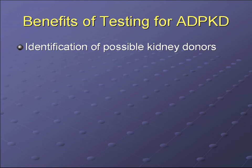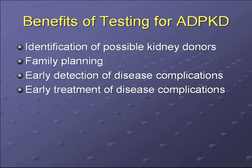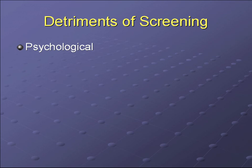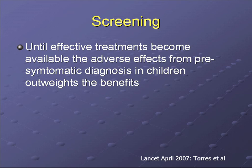The potential benefits of screening include identification of possible kidney donors, which is probably where genetic testing has its greatest utility, as well as family planning and early detection of complications such as hypertension. Potential detriments include psychological issues — especially detecting disease in children — and educational, career, and insurability implications. Until effective treatments are available, the adverse effects of pre-symptomatic diagnosis in children outweigh the benefits, according to a recent review article.